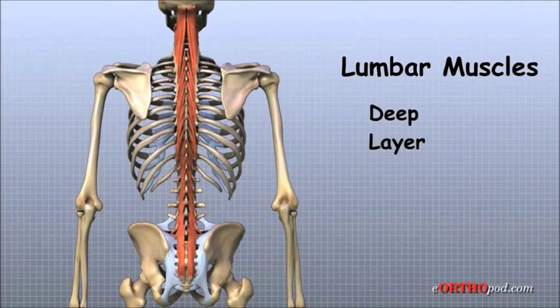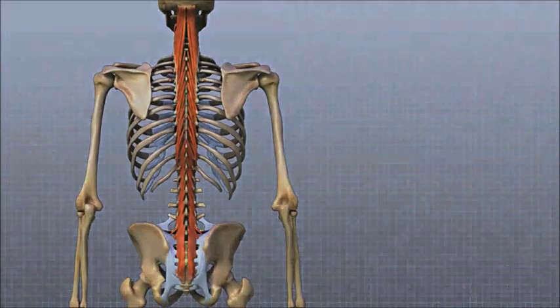The deepest layer of muscles runs along the back surface of the spine. These muscles connect the lumbar vertebrae, pelvis, and sacrum and coordinate movement with the muscles of the abdomen to help hold the spine steady during activity.